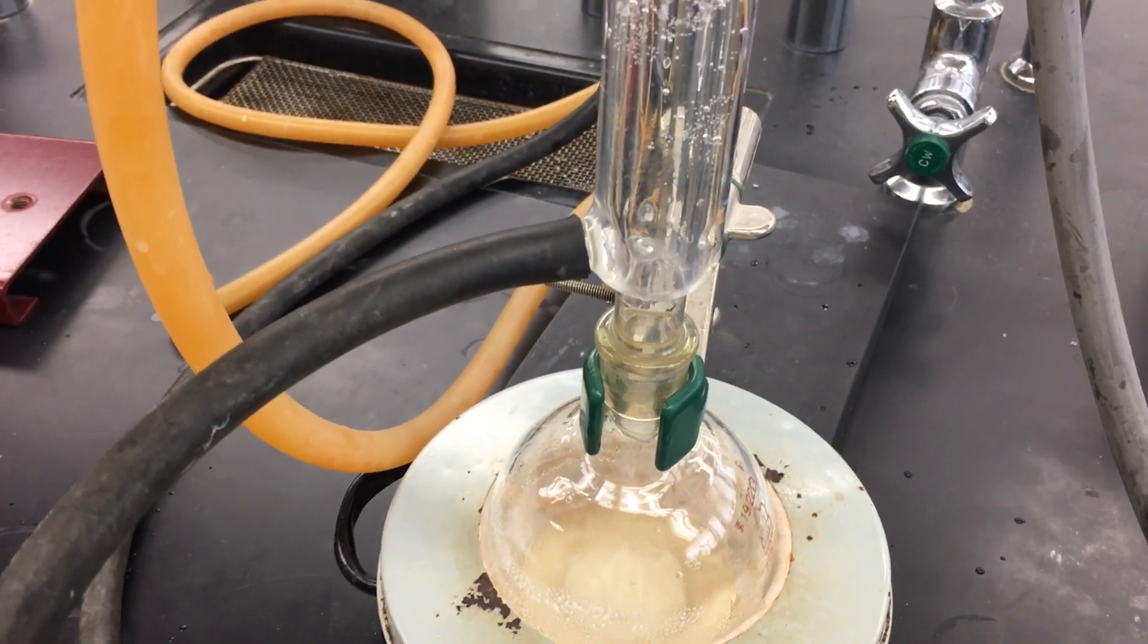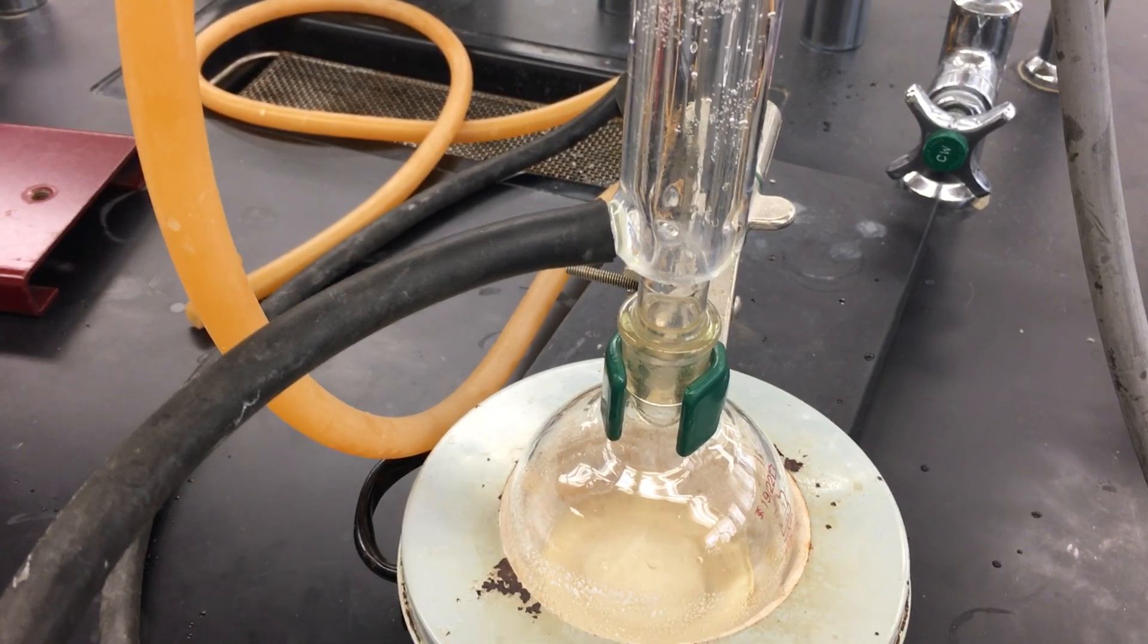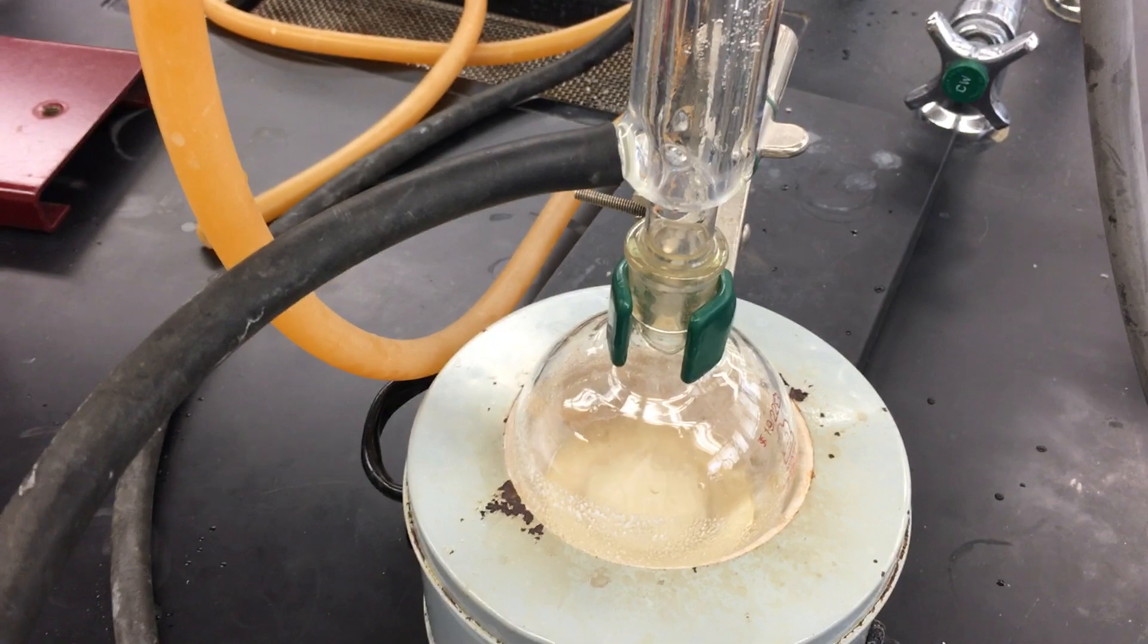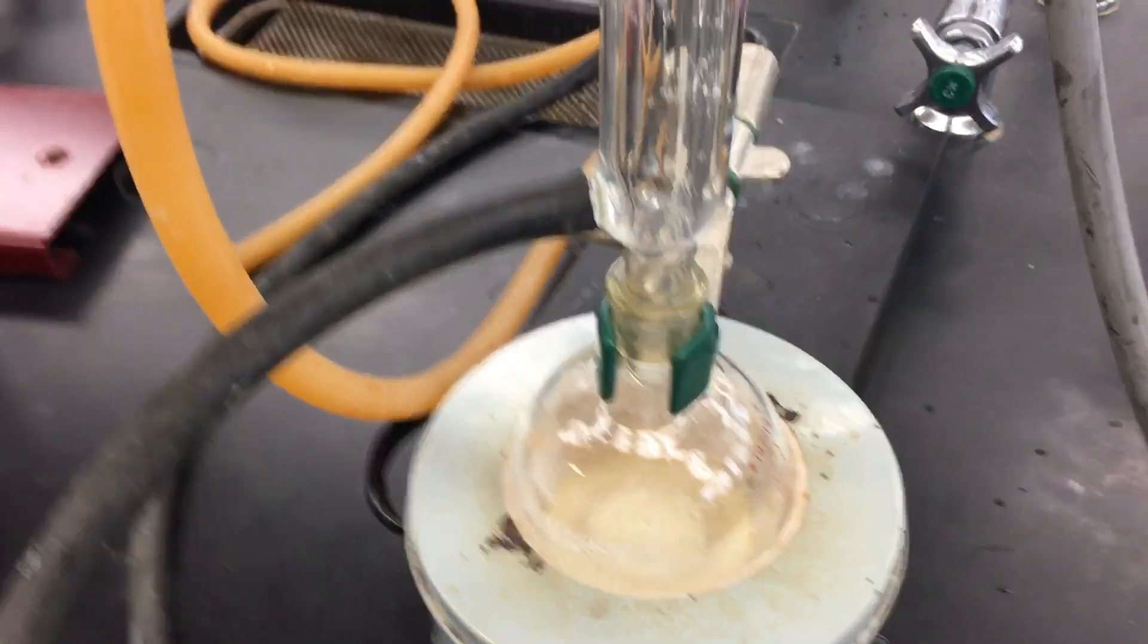The bromide ion reacts with butanol, generating bromobutane. This is the step where the SN2 reaction is actually taking place.